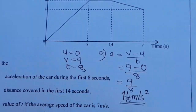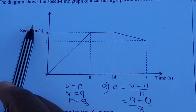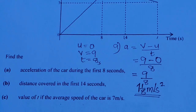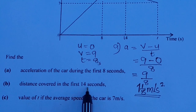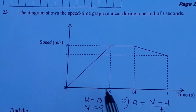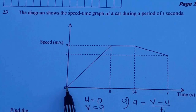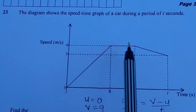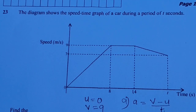That was Part A — meters per second squared because the speed is in meters per second. The second question says: find the distance covered in the first 14 seconds. 14 seconds is here, and they want you to find the distance the car traveled from 0 up to where 14 seconds is.